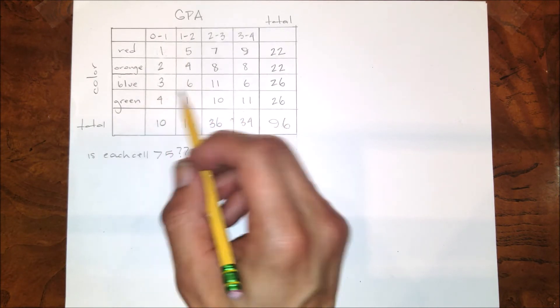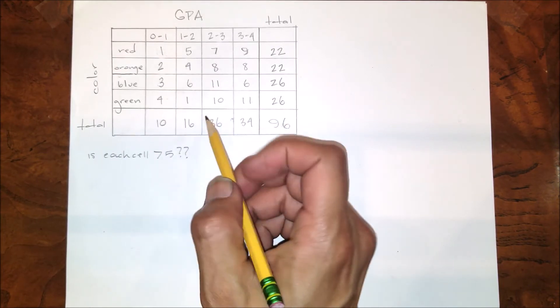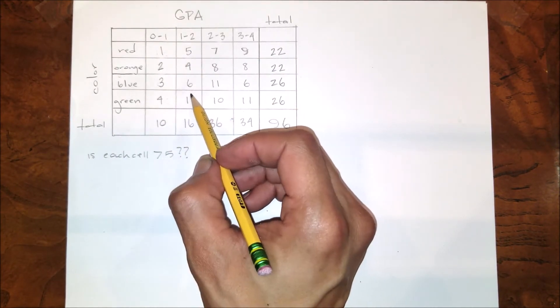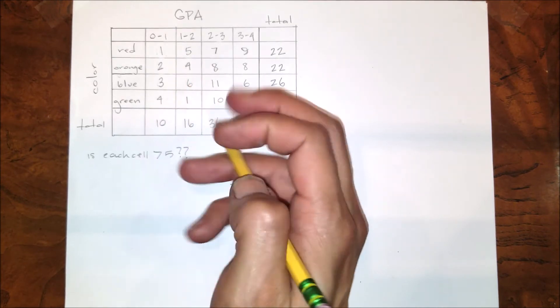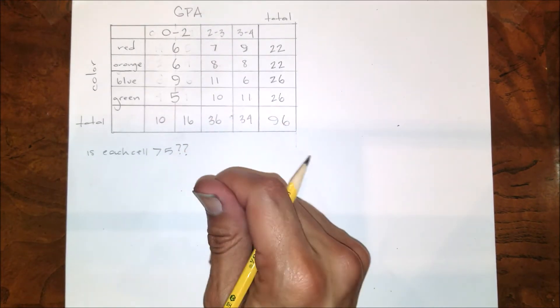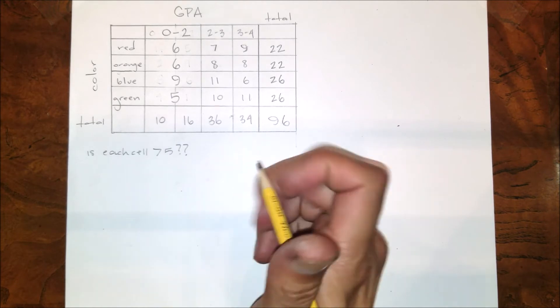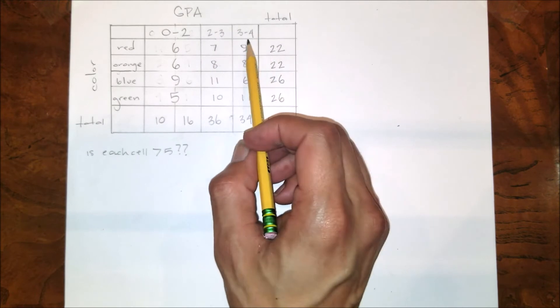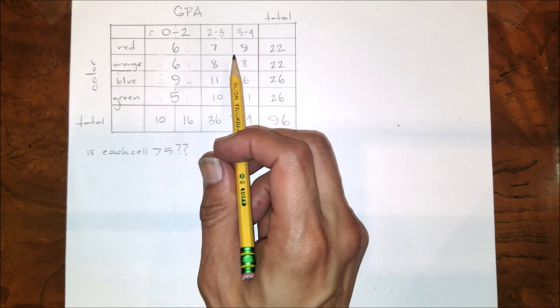So instead of having two separate columns, I'm going to have one combined column. So now I understand that this has a different range than this and this, however, that is secondary to this requirement being met.